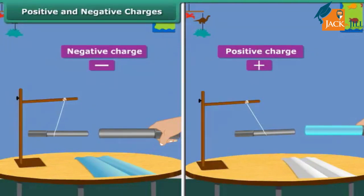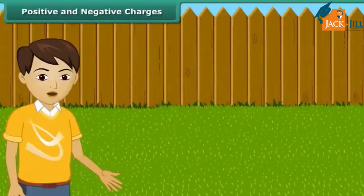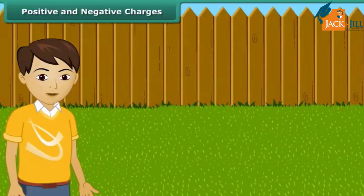Merely as a convention, charge on a glass rod rubbed with silk is taken as positive, and that of an ebonite rod rubbed with woollen cloth is taken as negative. From the earlier activity we can conclude that like charges repel each other and unlike charges attract each other.